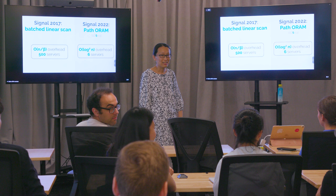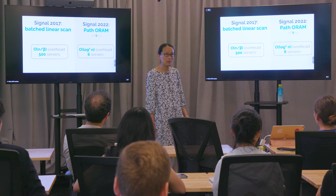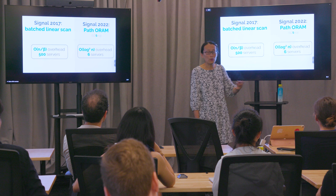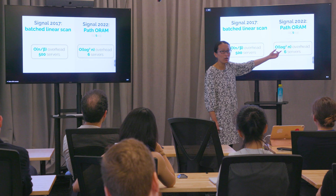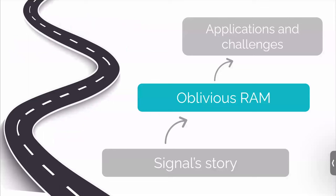Back in 2017, Signal published a blog post claiming that batch linear scan was outperforming Path ORAM. So likely they didn't implement Path ORAM correctly. Also, this log-squared has very small constants, so in practice it behaves more like log n — I'll explain why later. Basically, if you are a Signal user and Signal asks you to send contacts, just feel safe to do that — they are running my algorithm, it must be very secure.